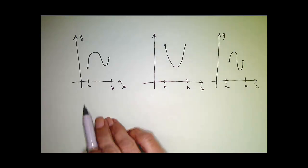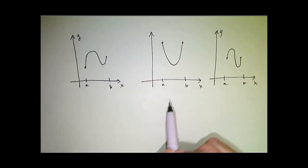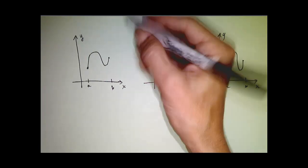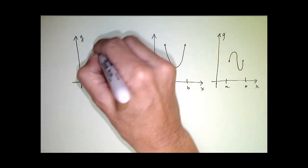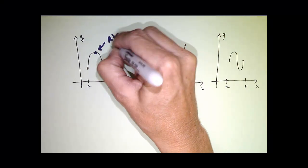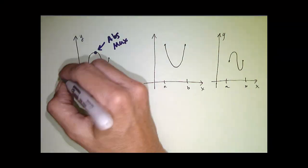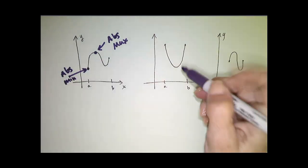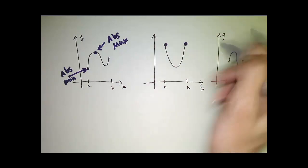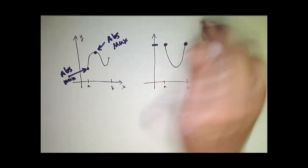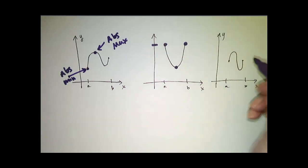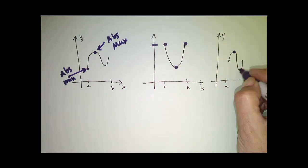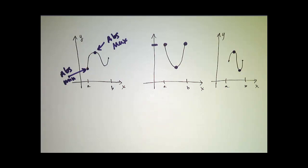What is true is that in every one of these pictures, I have an absolute maximum and an absolute minimum. In this graph, my absolute maximum is at that point and my absolute minimum is at this point. In this picture, I have my absolute maximum value occurring at two different points, and then I have an absolute minimum at that point. In all cases, I had an absolute maximum and an absolute minimum.